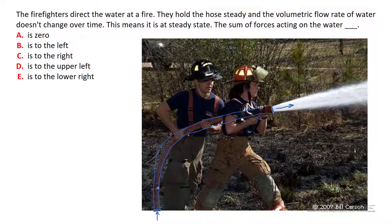Something to think about is the rate at which momentum enters the control volume, and the rate at which momentum leaves the control volume. At the bottom, we've got momentum entering the control volume, and that momentum is entirely vertical — it's only straight up and down. We've only got momentum entering in the y direction. Here I'll draw a coordinate axis: y is upward and x is to the right. So we've only got y momentum entering the control volume at the bottom.